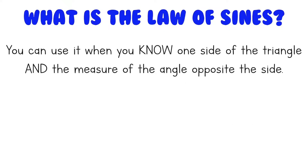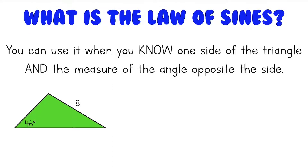You can use the law of sines when you know one side of the triangle and the measure of the angle opposite that side. So if you take a look at this triangle right here, we know this angle and we know the length of the side opposite of the angle, so we can use the law of sines.